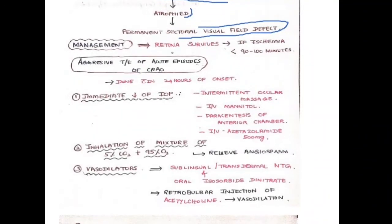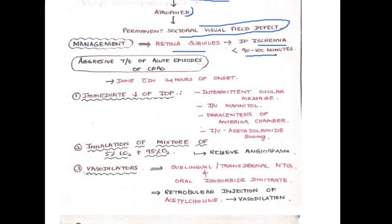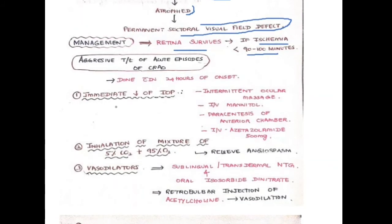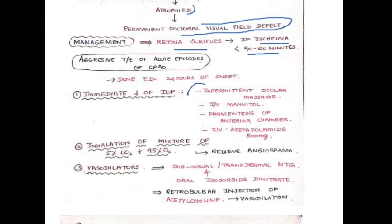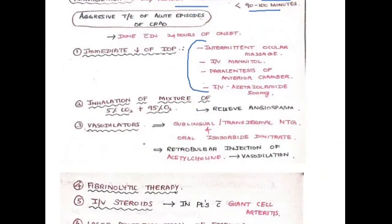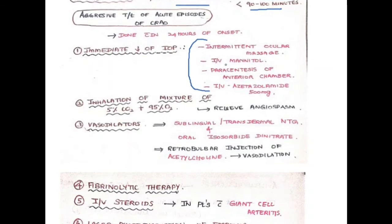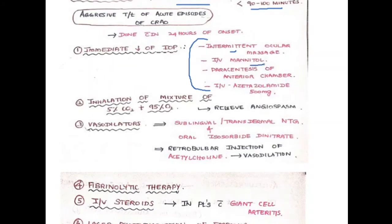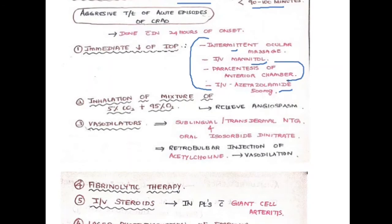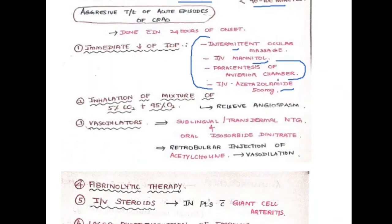Regarding management: the retina survives if ischemia is less than 90 to 100 minutes, so patients must reach hospital urgently. Immediate steps to reduce intraocular pressure include intermittent ocular massage, IV mannitol, IV acetazolamide 500 mg, and paracentesis of the anterior chamber.